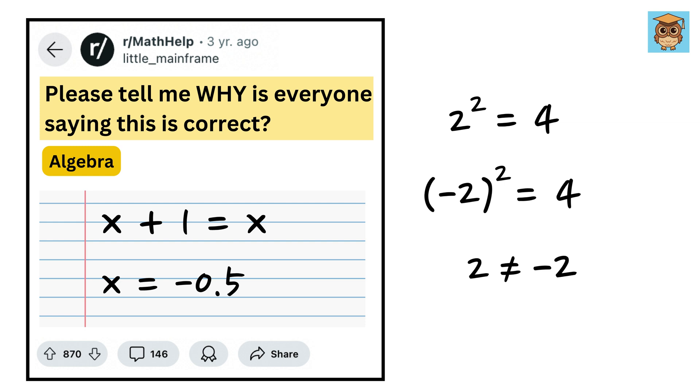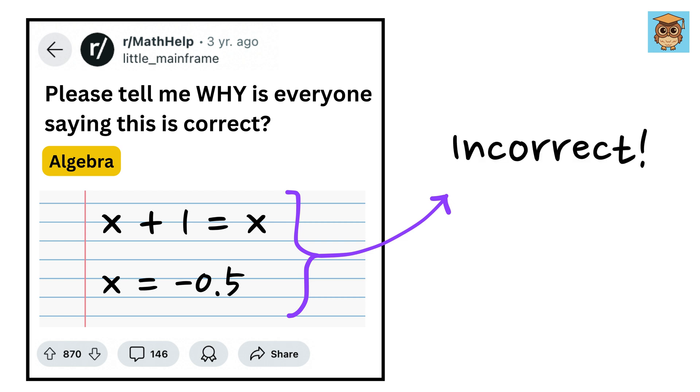That's the real trick here. In conclusion, x + 1 = x is incorrect for any real number.